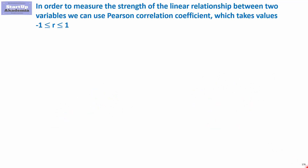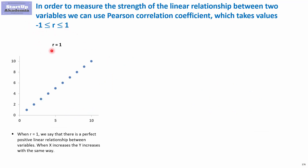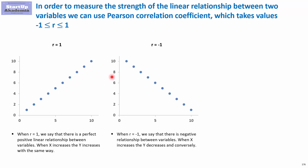We use the Pearson correlation coefficient to measure, and it can go from minus one to one. If it's one, then it would mean that there's an almost perfect correlation between two variables — they behave almost in the same manner, and when one goes up, the other one goes up as well with the same strength.